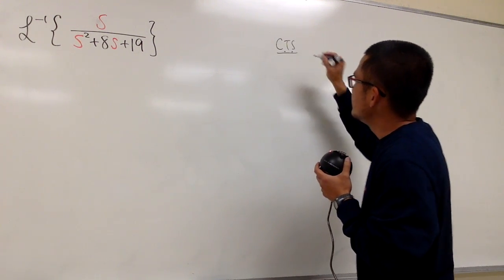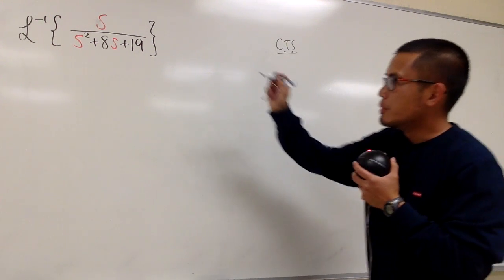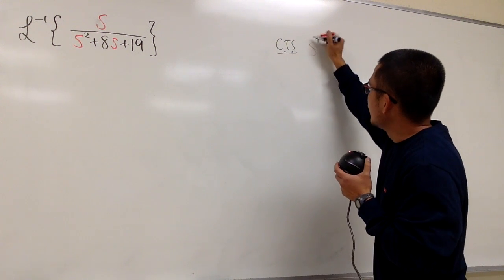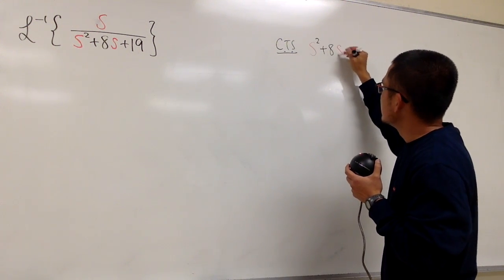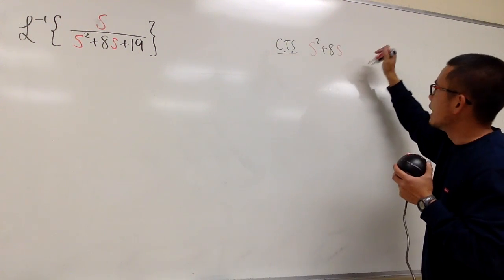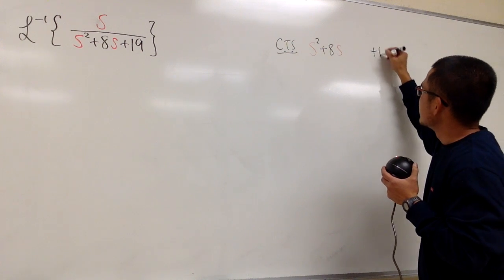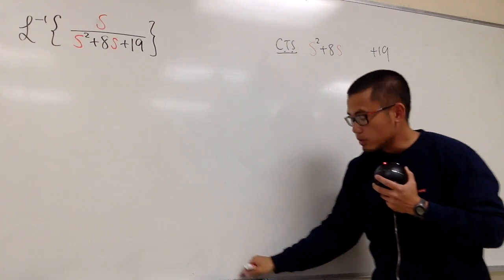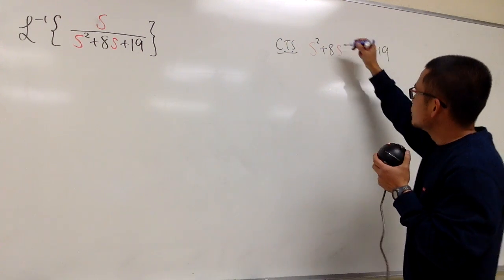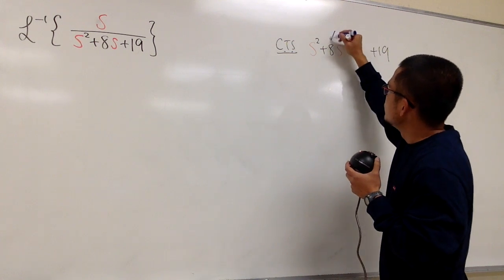CTS stands for completing the square. Let me write that down again. We have s squared plus 8s, and let me leave a space, and then let's put down the plus 19 right here. To complete the square, we have to look at the coefficient of the s, which is 8.